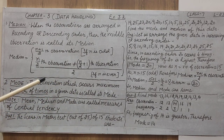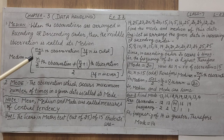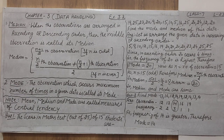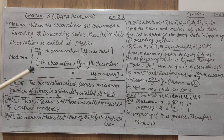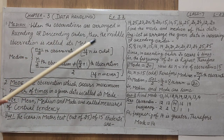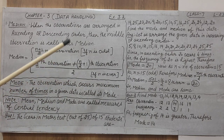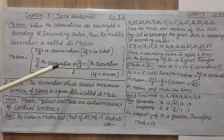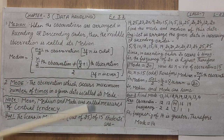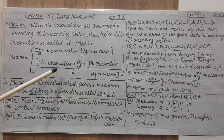Now we will do a few questions related to median. Only when we use these formulas again and again will we develop a better understanding of them. Just like with mean — we used it in many questions and then the formula became easy. This formula is also very easy. Remember, the formula gives only the number of the observation; the actual answer is the observation at that position.